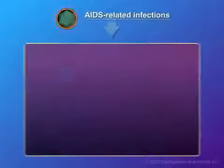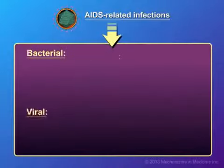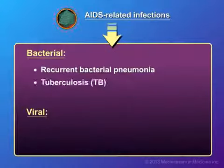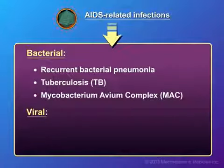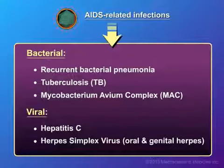Other AIDS-related infections include bacterial infections and viral infections. Bacterial infections include recurrent bacterial pneumonia, tuberculosis or TB, and mycobacterium avium complex, or MAC. Viral infections include hepatitis C and herpes simplex virus, or oral and genital herpes.